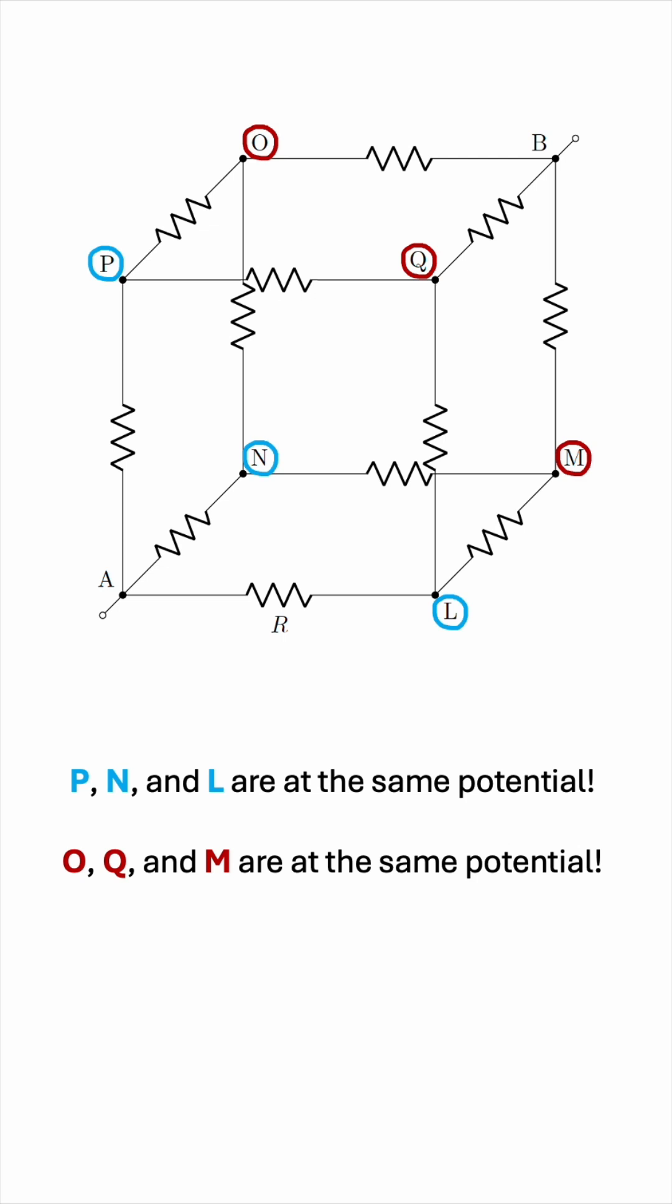With this in mind, can we now transform this setup into something 2D that is electrically equivalent to it? Not yet. Let's try and have a deeper understanding of the branching that happens. For example, at node A, we have three branches that go towards P, N, and L, and then these in turn split into two branches.